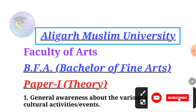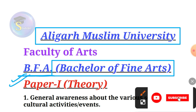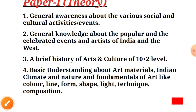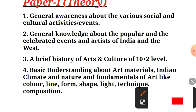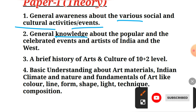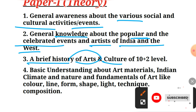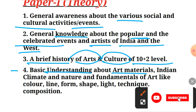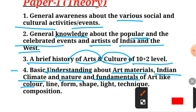Aligarh Muslim University, Faculty of Arts — BFA Paper First: Theory. There are four units. Unit one: general awareness about various social and cultural activities and events. Unit two: general knowledge about popular and celebrated events and artists of India and the West. Unit three: a brief history of arts and culture at the plus-two level. Unit four: basic understanding of art materials, Indian climate and nature, and fundamentals of art like color, line, form, shape, light, technique, composition, etc.